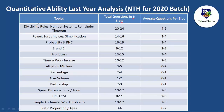Based on the survey, divisibility rules, number system, and remainder theorem had 20 to 24 questions across all six slots — so four to five questions per slot on average. Power and surds/indices and simplification had 14 to 16 total questions, meaning three to four questions per slot.